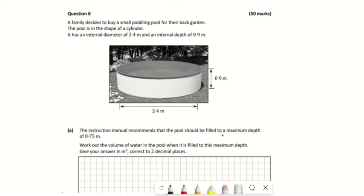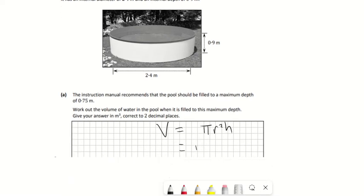In problem 8, we have to work out the volume of water in the pool when it is filled to its maximum depth. Everything here is in meters, so we're just going to use the formula π r² h for the volume of a cylinder. That's in the log tables, so π times radius—the radius would be half of 2.4 because 2.4 is the diameter, so 1.2 squared times h which is 0.9.